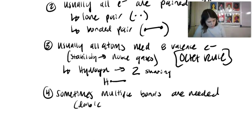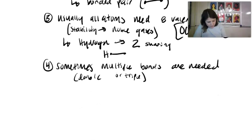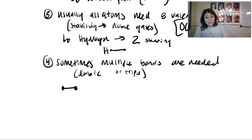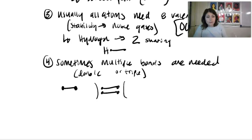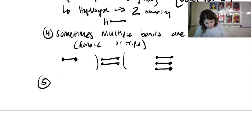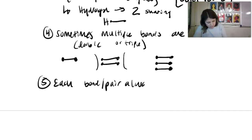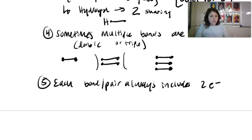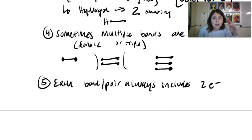Requirement four: sometimes multiple bonds are needed — this could be a double or triple bond, where you might see two or three pairs of electrons shared between atoms. Requirement five: each bond or pair always includes two electrons. If you see an electron by itself, you didn't do it right — everyone needs a friend.